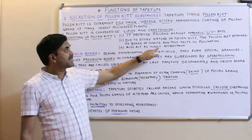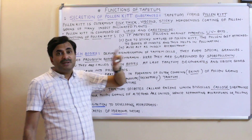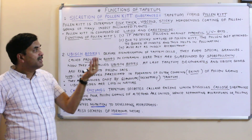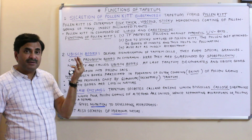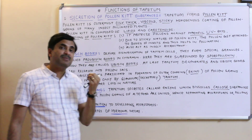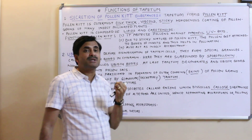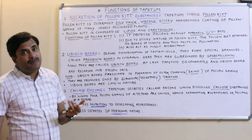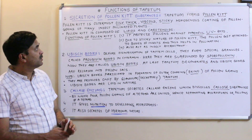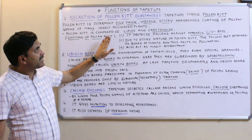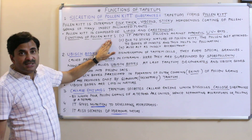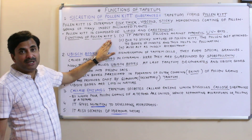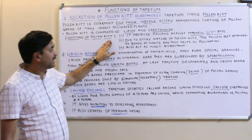The pollen kit also acts as an insect attractant. Because of the pollen kit, insects are attracted towards the flower, which again helps in pollination. So pollen kit is secreted by the tapetum and is found around the pollen grains of insect-pollinated flowers.